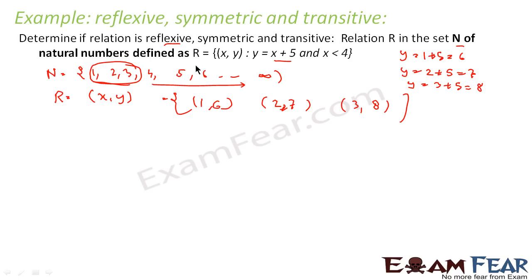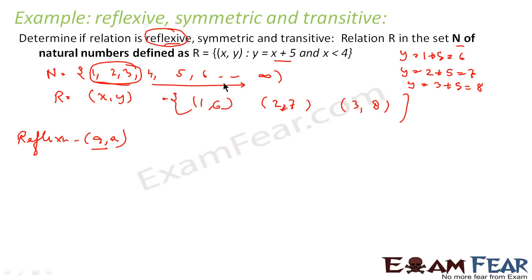Now I have to find whether it is reflexive. For reflexive, (a, a) elements should be there — that is (1,1), (2,2), (3,3), (4,4) and so on. But (1,1) is not there, so it is not reflexive.